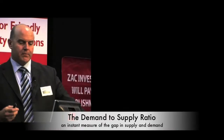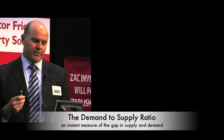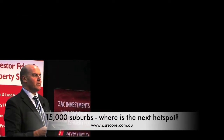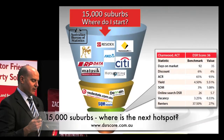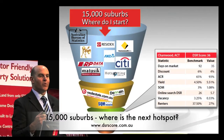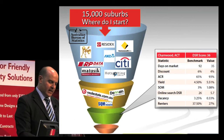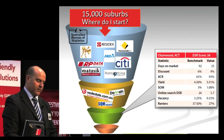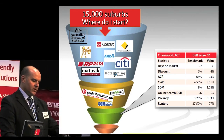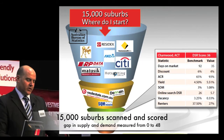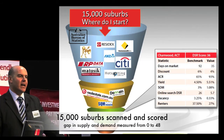I want to talk about a way that you can shortcut some of your research. Now in Australia there are over 15,000 suburbs to choose from, so it can be very overwhelming deciding which property to choose. But there's a new tool that we're starting to use, which has got excellent results with our clients, and it looks at eight key market indicators.